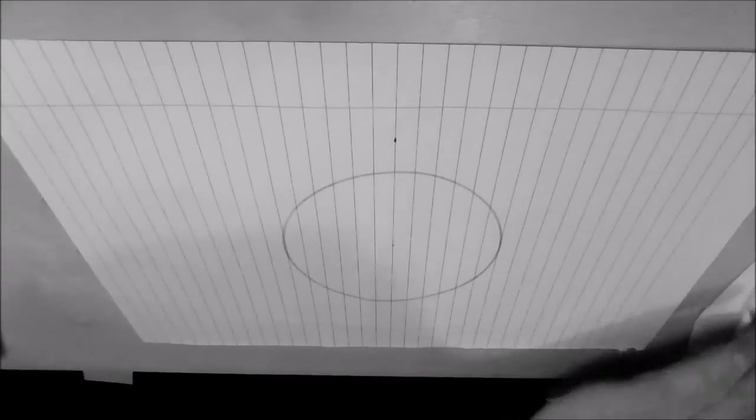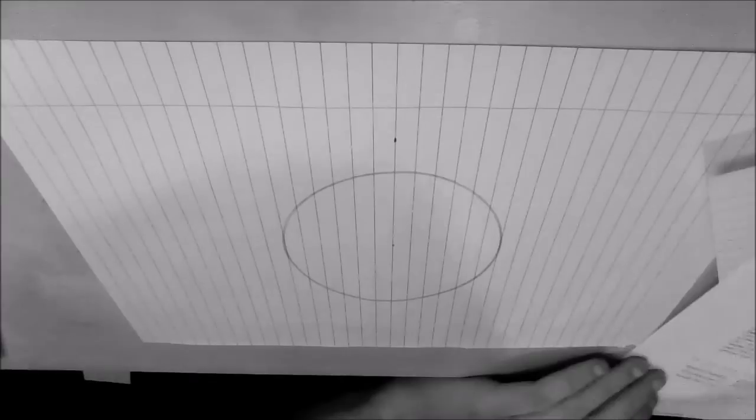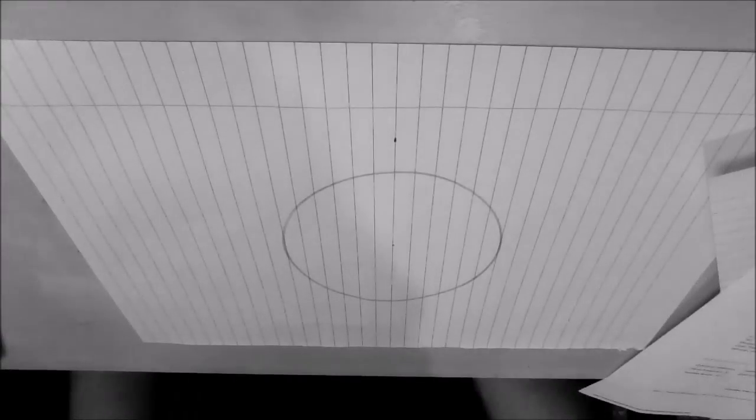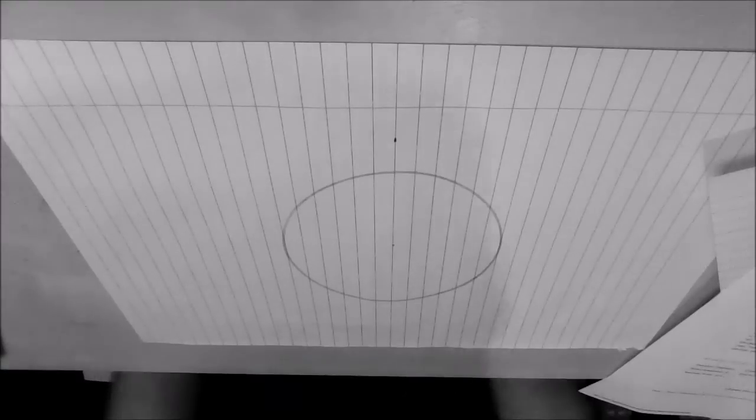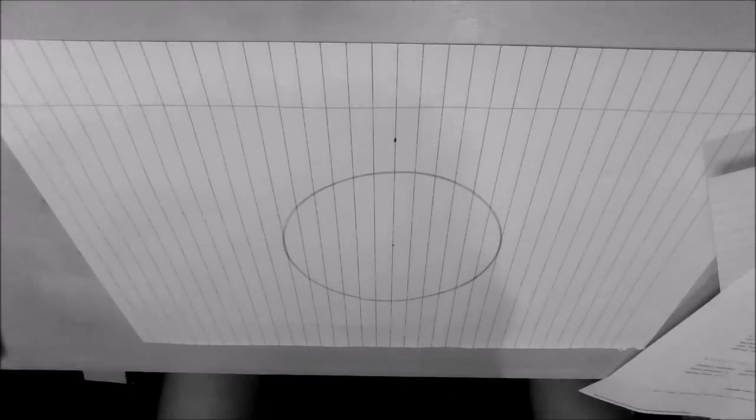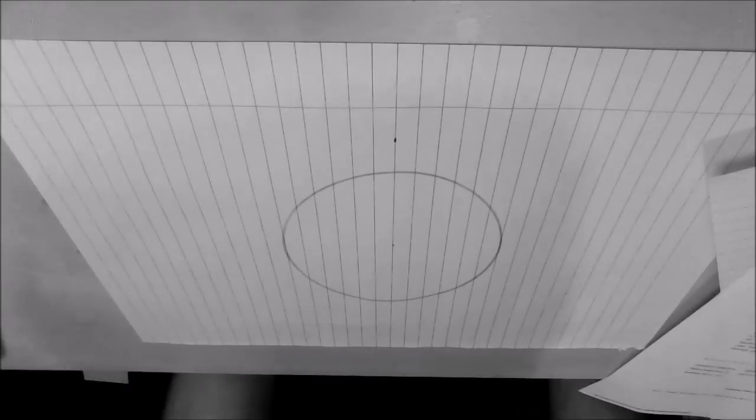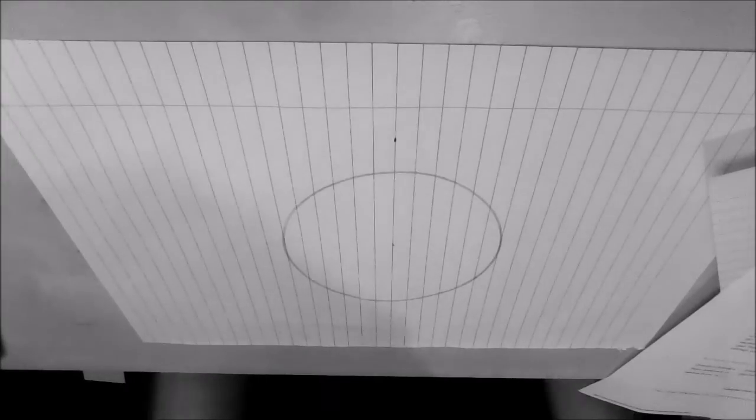OK, so the question states that a route is flying from 80 south 100 west to 80 south 140 east. At 160 west, the grid track and true track on a polar stereographic chart with a grid oriented on the 180 meridian are respectively...